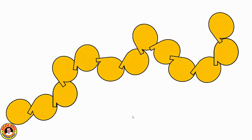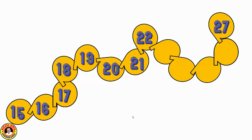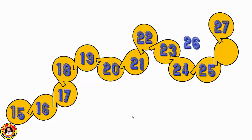Let's try again. This is a number chain starting with 15 and ending with 27. We put the remaining numbers after 15: 16, 17, 18, 19, 20, 21, 22, 23, 24, 25, 26. In this way we complete the number chain from 15 to 27. Thank you for watching!